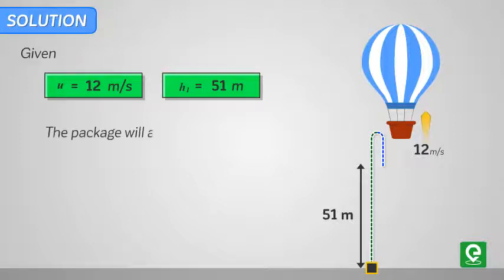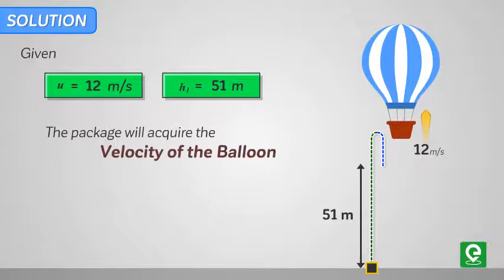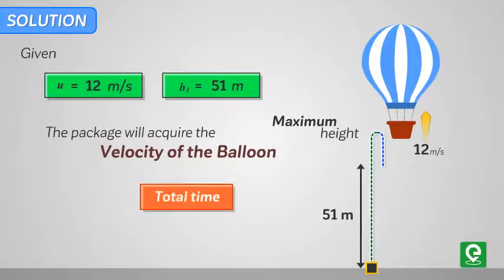The important thing students must observe here is that once the package is released from the balloon, the package will acquire the velocity of the balloon. This means that the package will ascend with an initial velocity of 12 meters per second in the upward direction until it comes to a complete stop at maximum height, then starts free-falling towards the ground.